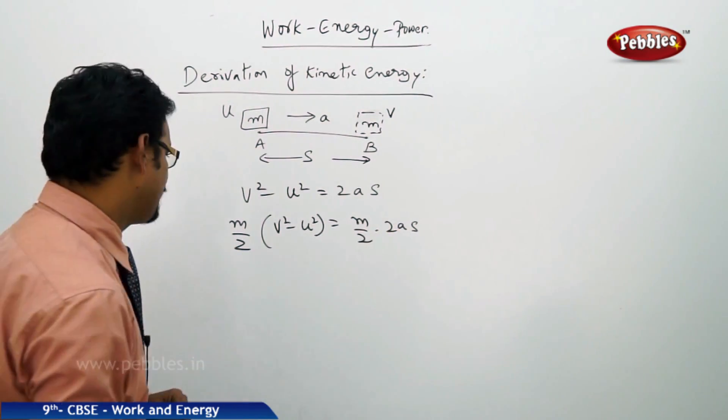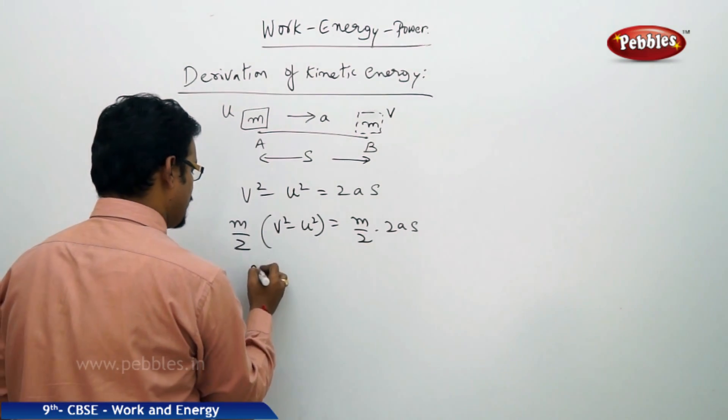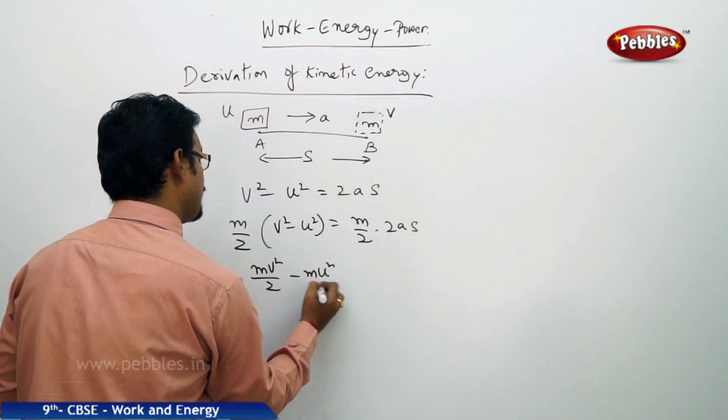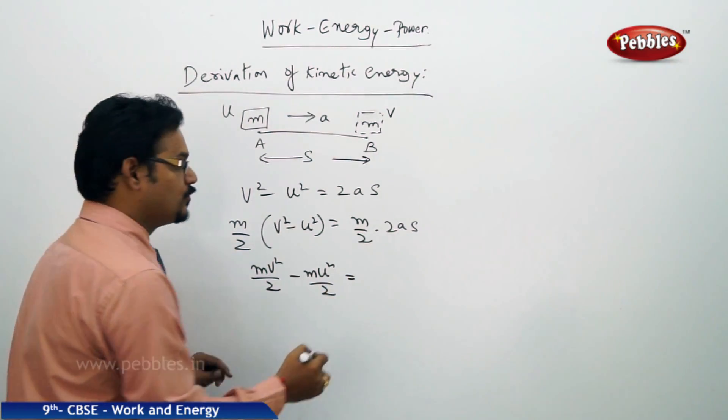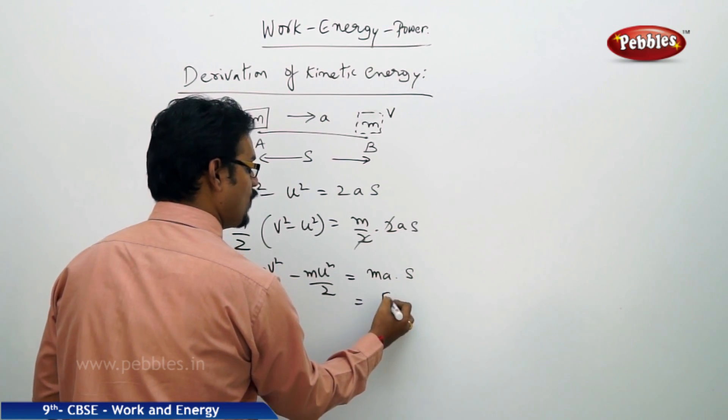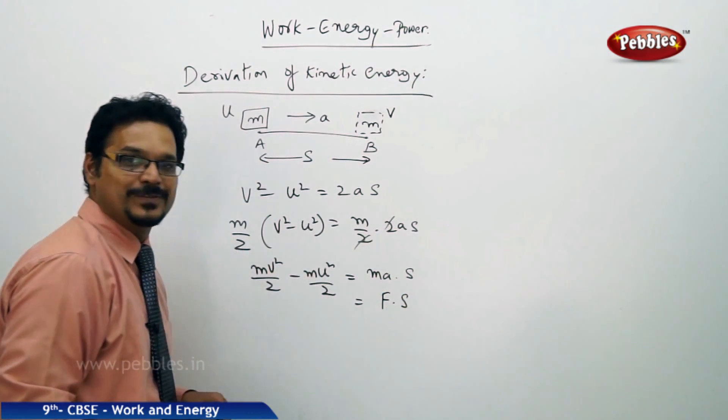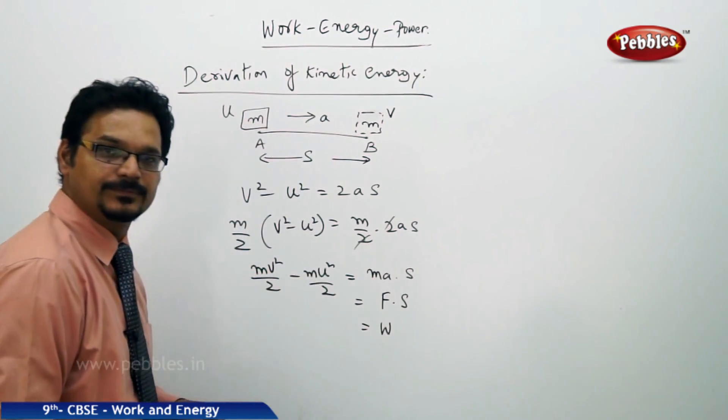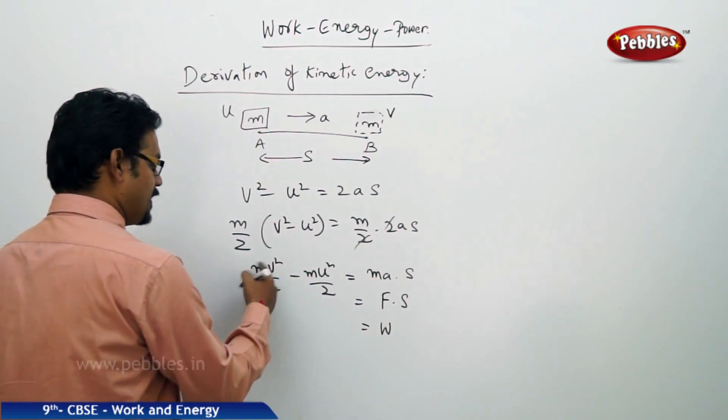If you take m by 2 inside you will get mv squared by 2 minus mu squared by 2 equals 2 to cancel, you get ma into S. ma is the force F into S, so F into S is nothing but work done.